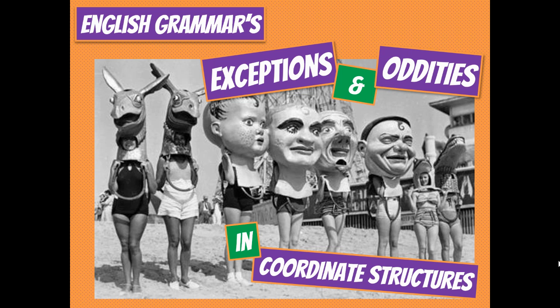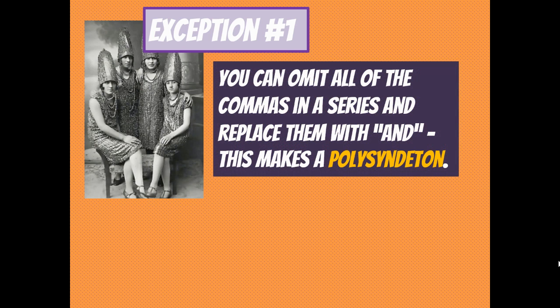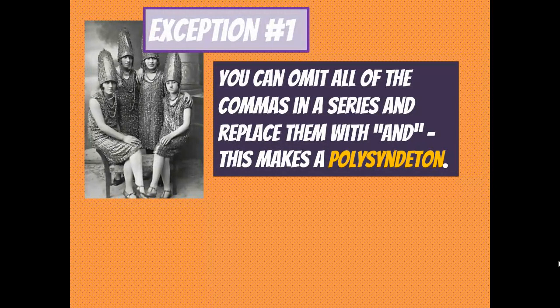Today we're taking a look at English grammar's exceptions and oddities in coordinate structures. The first of three exceptions is the polysyndeton. You can omit all the commas in a series and use the word 'and' between every single item, and this creates what we call a polysyndeton.